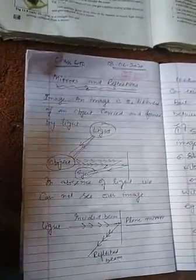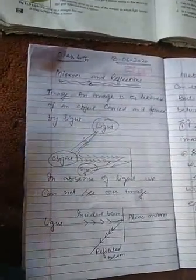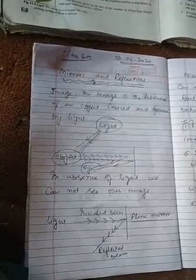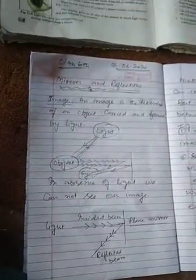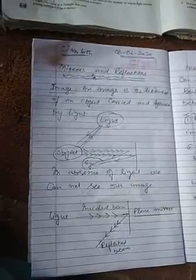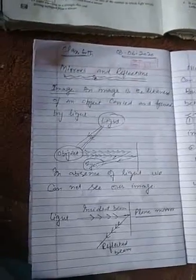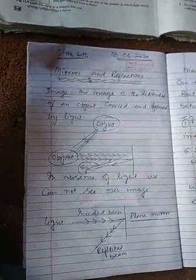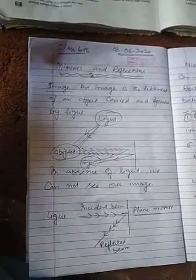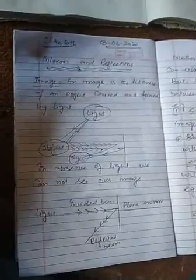When you see an image, the image is the likeness of an object. Without light, there is no image.